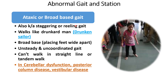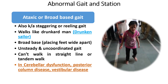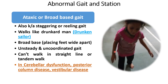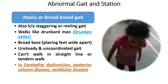Another abnormal gait is the ataxic or broad-based gait, also known as staggering or reeling gait — the child walks like a drunkard, hence called the drunken sailor gait. The child walks with broad base, feet wide apart, with clumsy, unsteady, swaying, lurching, or uncoordinated movements. The child cannot walk in a straight line and may fall to the affected side or lose balance on tandem walk. It is seen in cerebellar dysfunction, posterior column disease, and vestibular disease.